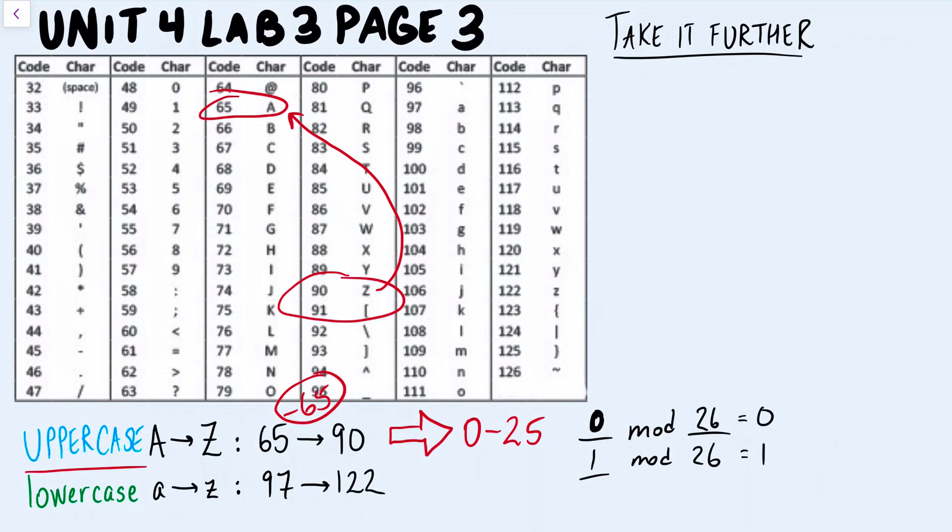Now, this is useful because if I want to convert this right back to uppercase Unicode, all I got to do is add 65, and I am right back where I started, A. So 0 is A, 1 plus 65 is B. The reason I modded by 26 is because that's how many characters there are in the alphabet that I'm going to be looking at.